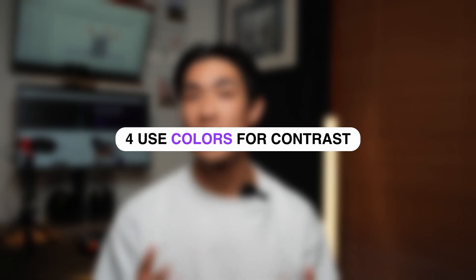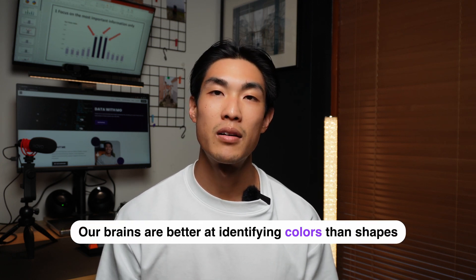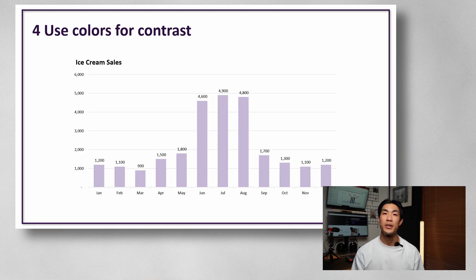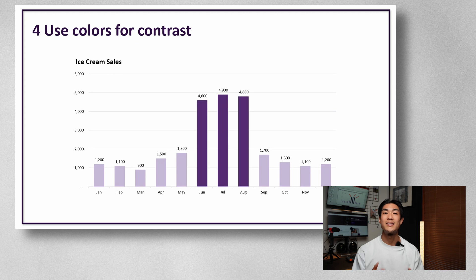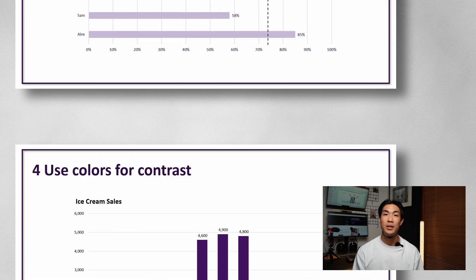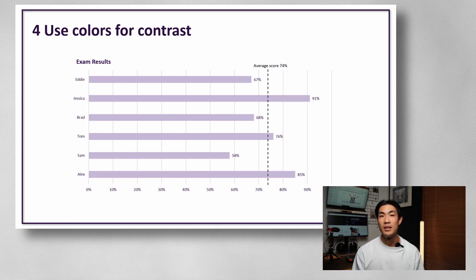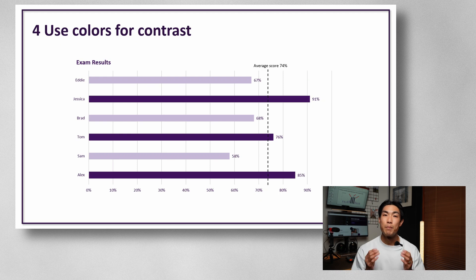Tip number four would be to use colors for contrast. Our brains are better at identifying colors rather than shapes, so try and use this human trait to your advantage. Let's look at this earlier example with the sales figures without using a different color for contrast — not so eye-catching, right? Changing the color of the highest sales immediately draws your attention to the summer months. Much better, isn't it? Or let's look at these exam results. I can see that Jessica, Tom, and Alex scored higher than the average. But once I use a darker color for contrast, it instantly pops out that they're the ones who did better than the average.